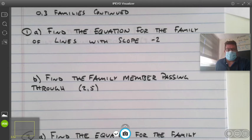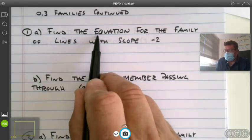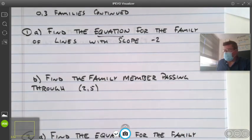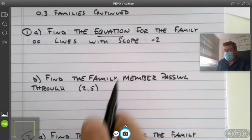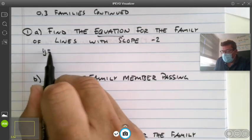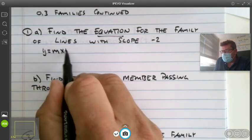So the first thing that I think of when I'm trying to find equations of lines, I'm thinking slope-intercept form, I'm thinking point-slope form, maybe standard form, but when they give me the slope, I'm thinking y equals mx plus b.